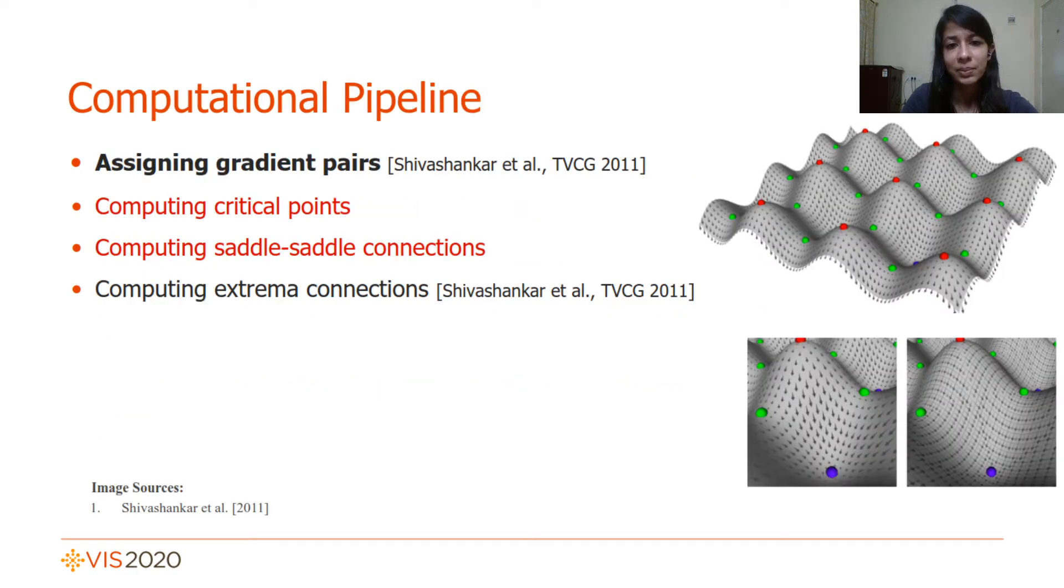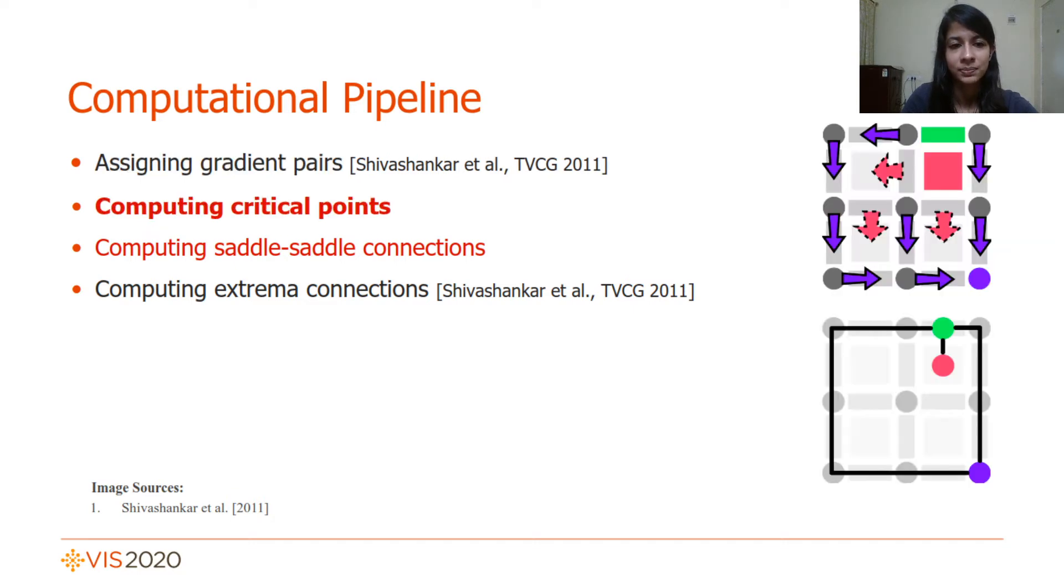The computational pipeline for this task consists of four steps. The first step assigns gradient pairs which we borrow from the state-of-the-art by Shivshankar et al. Further, these gradient pairs are used to locate all critical points.